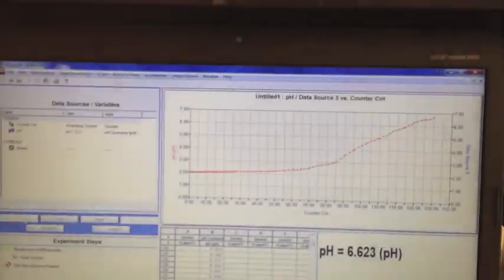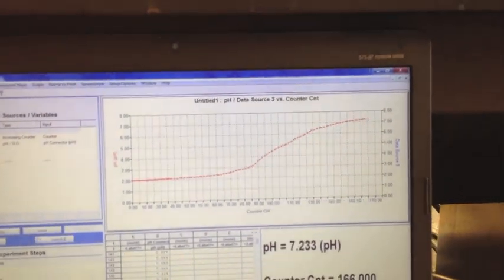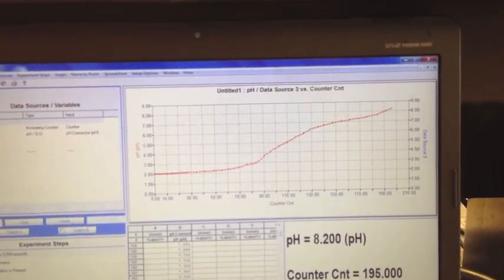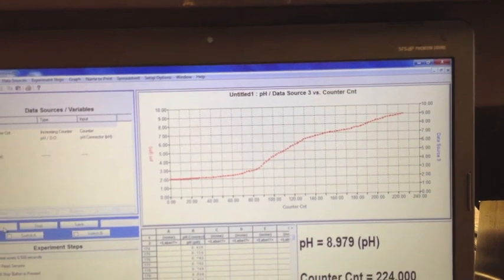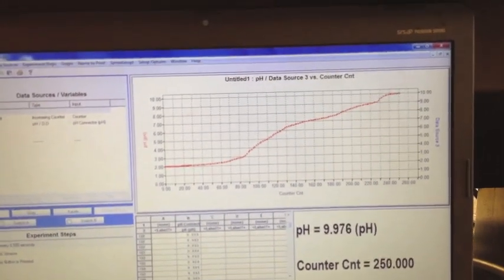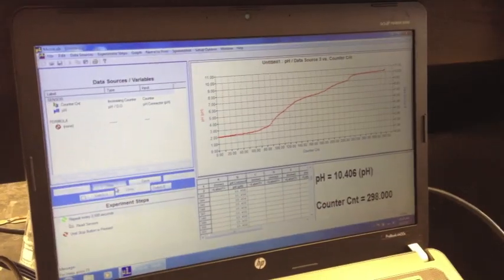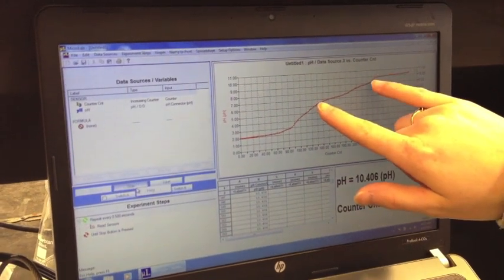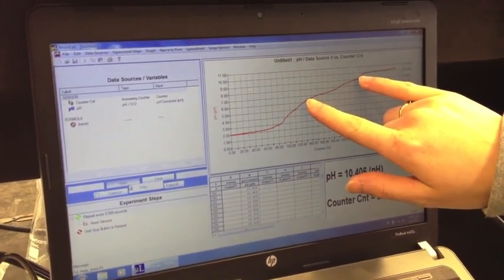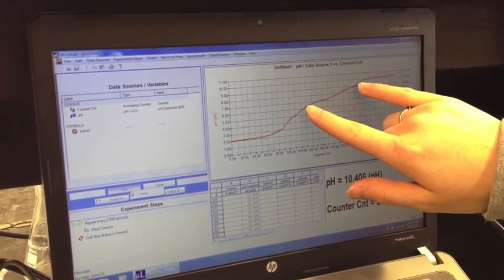As your titration progresses towards the endpoint, this is the graph you should see by using the Microlab system. When your titration is done, you should have a pH curve that looks something like this. Since we're titrating phosphoric acid, it has three equivalence points, but since the third one is so minimal, we can only see two, as indicated here.